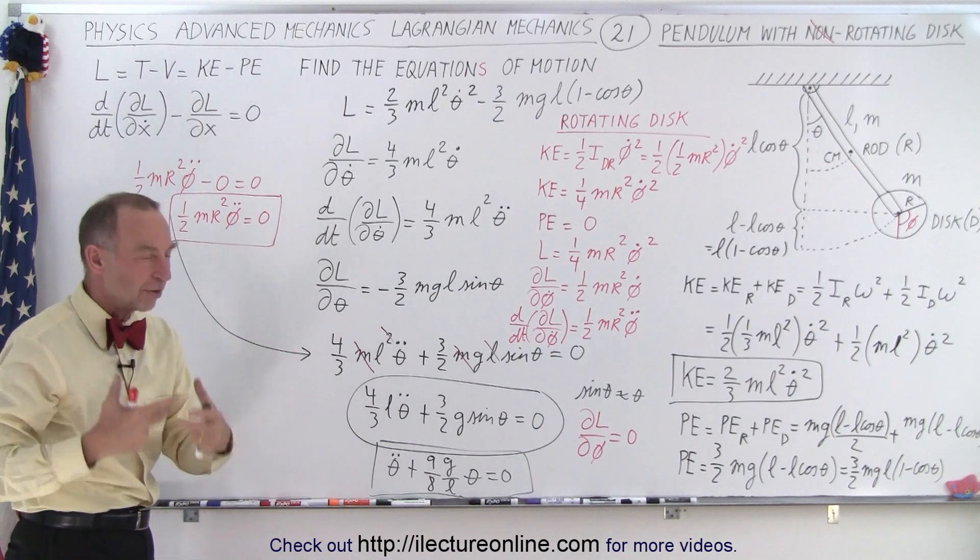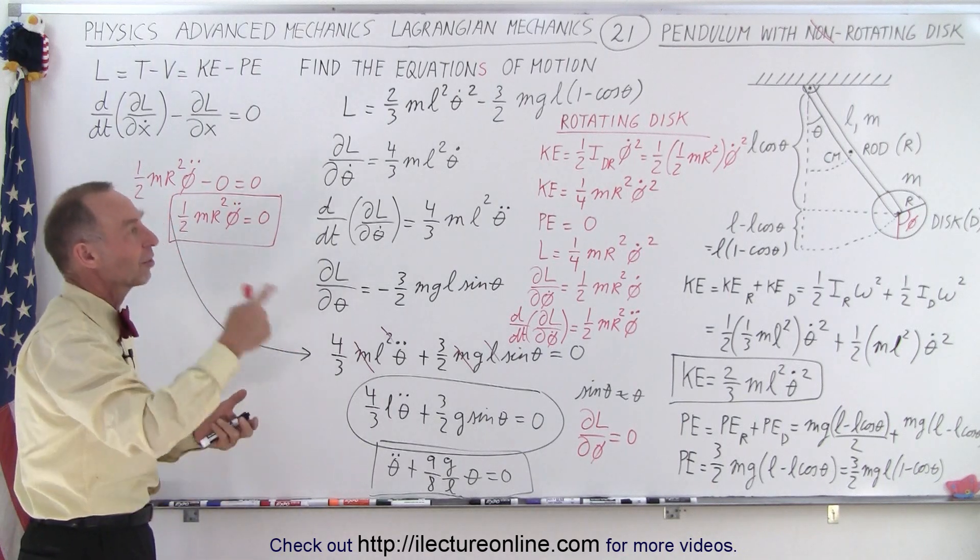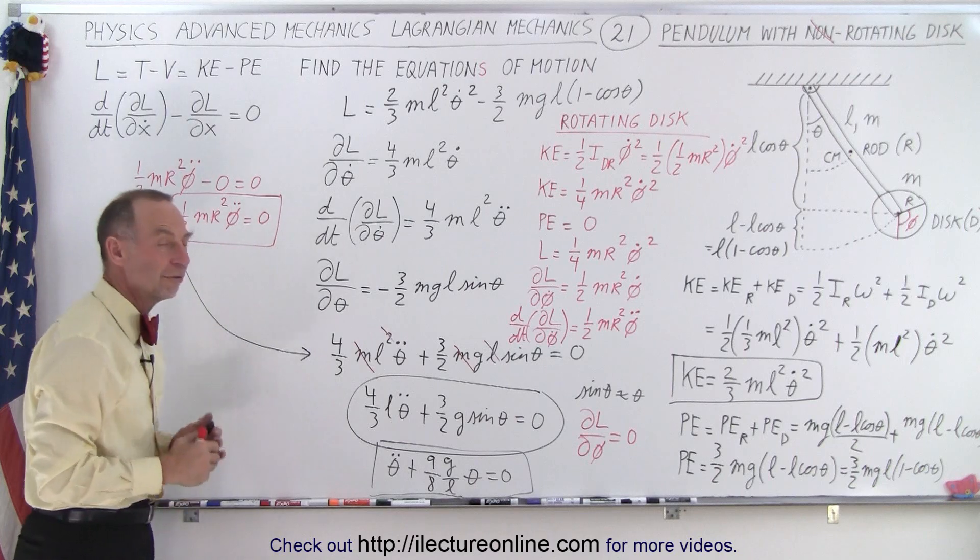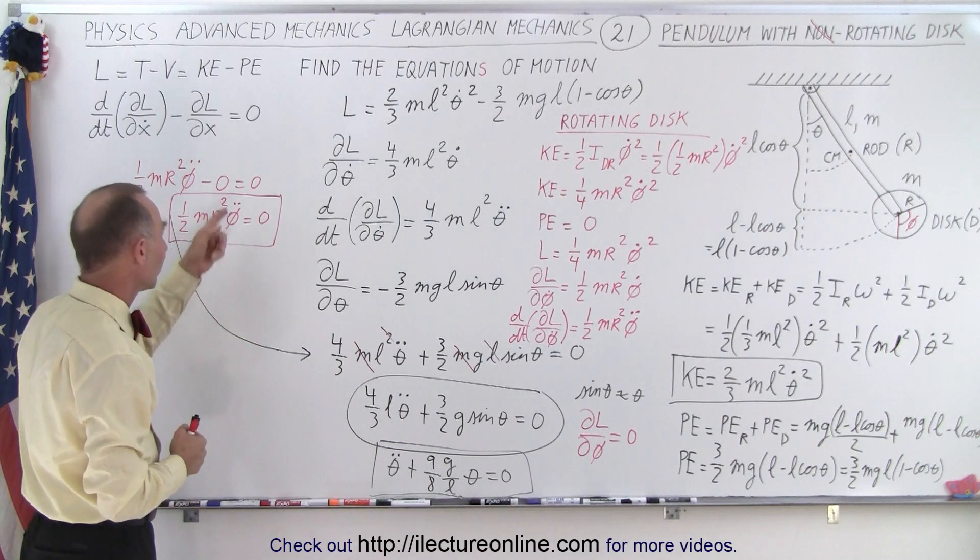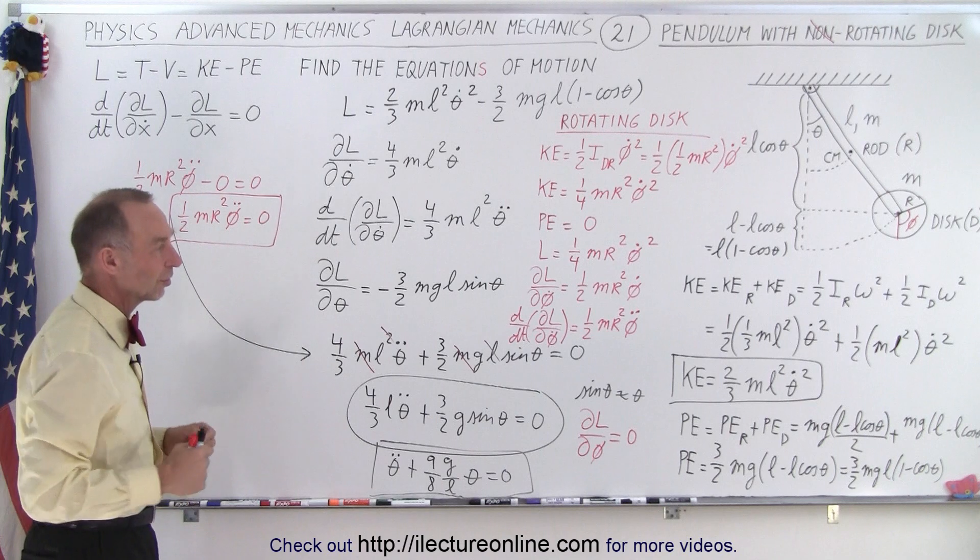If this wasn't zero, meaning if there was some outside influence or force causing it to rotate, then of course we would have a force equals one half m r squared phi double dot, and then we'd see rotation of the disk.